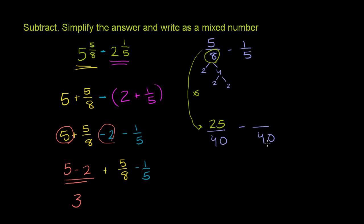Now, to go from 5 to 40, we have to multiply by 8. So we also have to do that for the numerator. So 1 times 8 is 8.